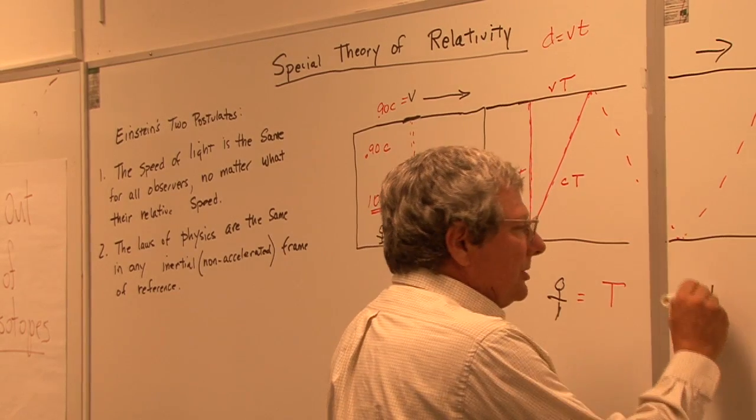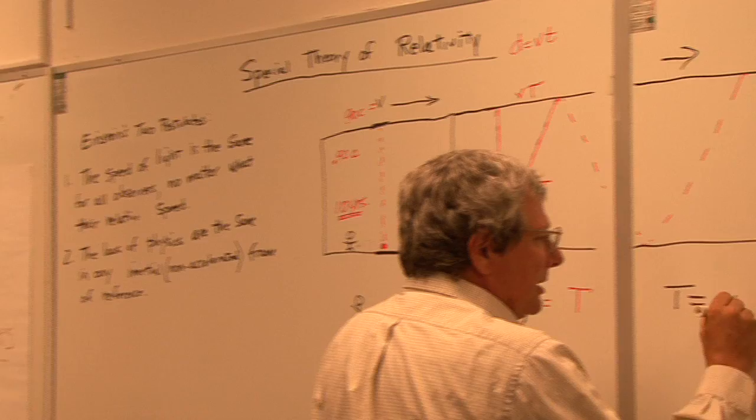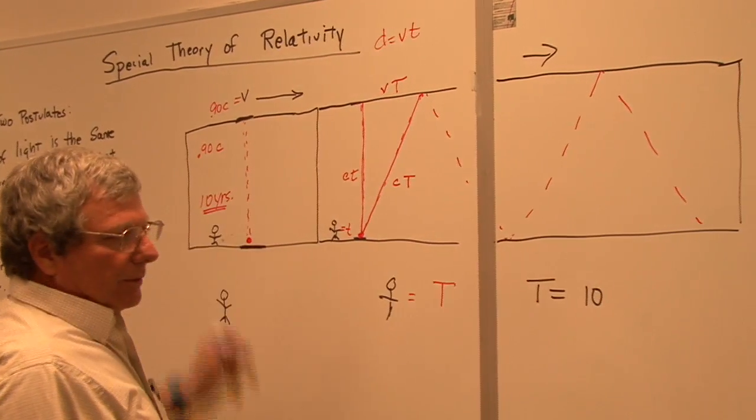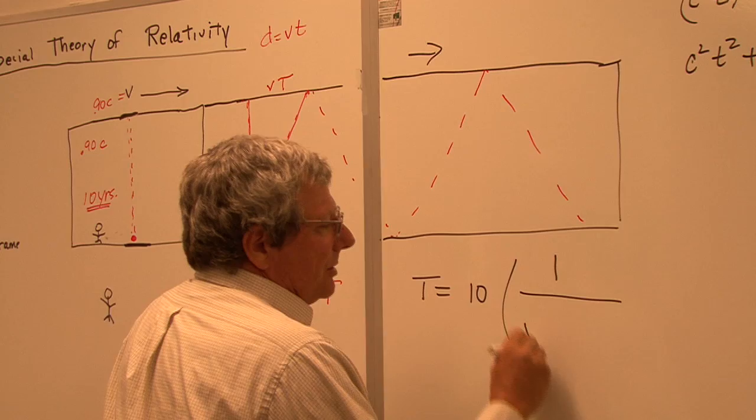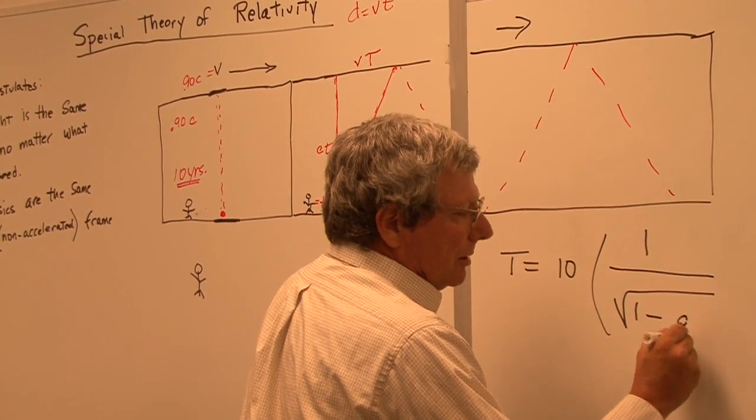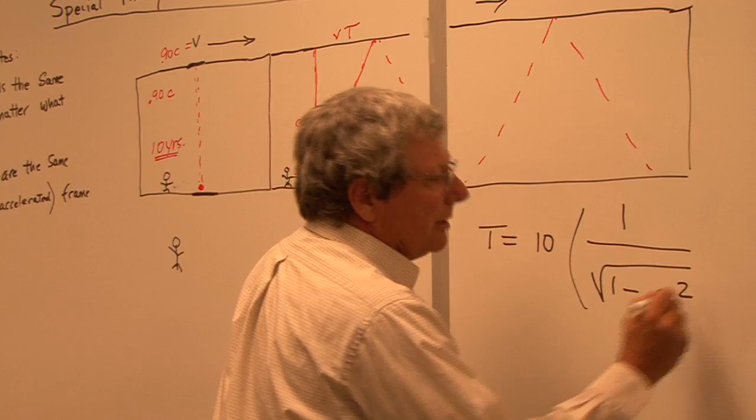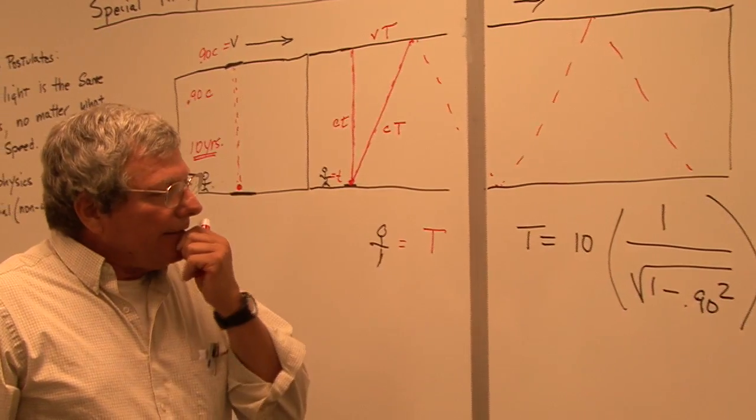We can just say capital T equals 10 years, that was the time of the person moving, times 1 over the square root of 1 minus 0.90 squared.